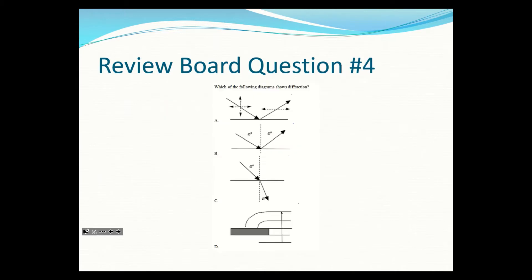Which diagram shows diffraction? One option is polarization, another is reflection, another is refraction — we didn't cover those. Sending a wave towards a barrier and having it bend around it means D is the correct answer.